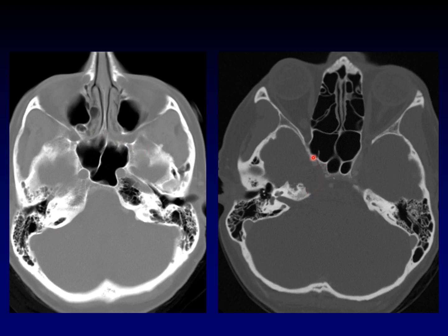Look on this side. There is loss of the normal bone in the medial petrous apex. Look how the internal carotid artery has been displaced compared to its counterpart. This is an expansile mass thinning the bone to a degree of imperceptibility and displacing surrounding soft tissue structures. This is really a huge mucocele, but because it's got blood degradation products in it, it's going to be bright on T1-weighted imaging, and that's what we call a cholesterol granuloma.